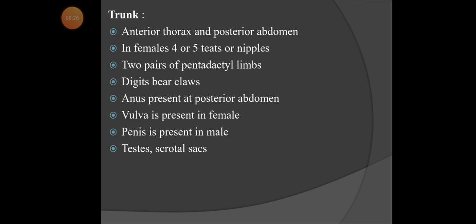At the tip of the limbs, digits and claws are present — claws meaning sharp nails. At the posterior end of the abdomen, the anus is present, which is a minute opening through which excretory products come outside. The vulva is present in females — the female reproductive part where eggs are produced and fertilization occurs.